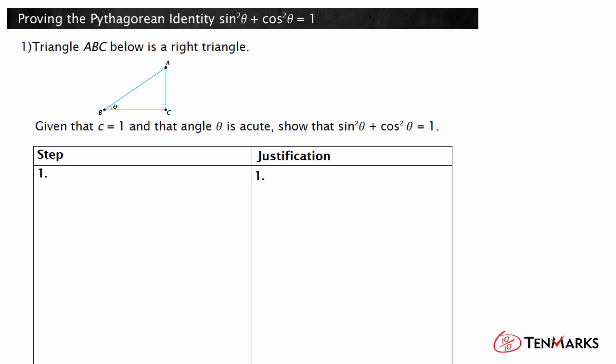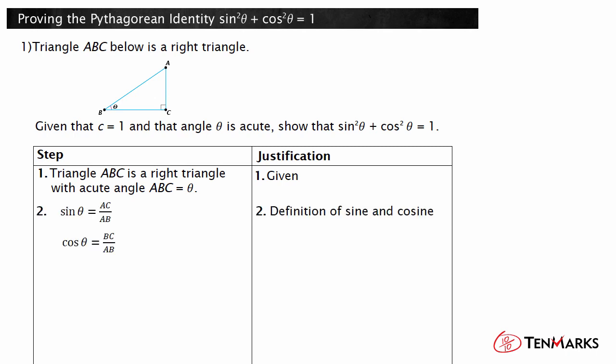Remember, start the proof with the given information. Triangle ABC is a right triangle, so you can use sine theta and cosine theta to write these equations as the second step of the proof.